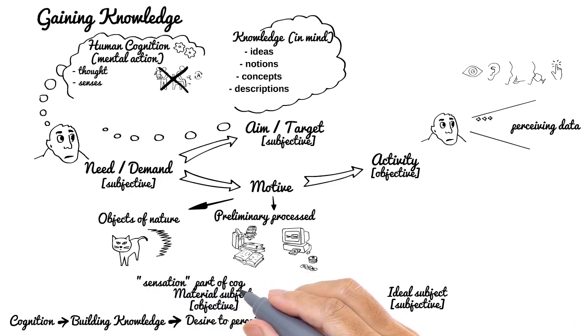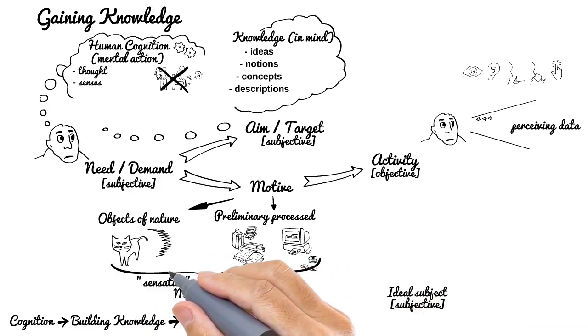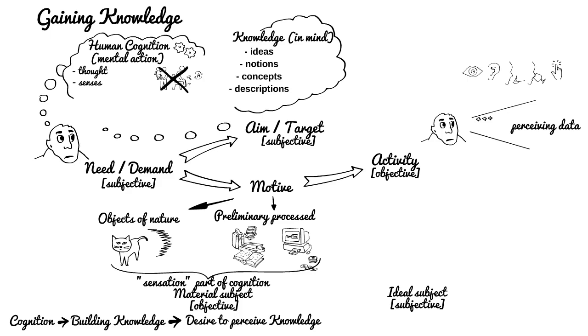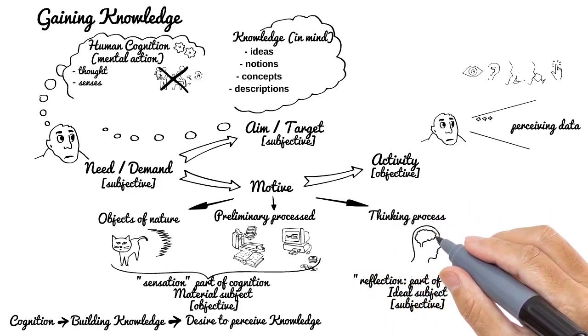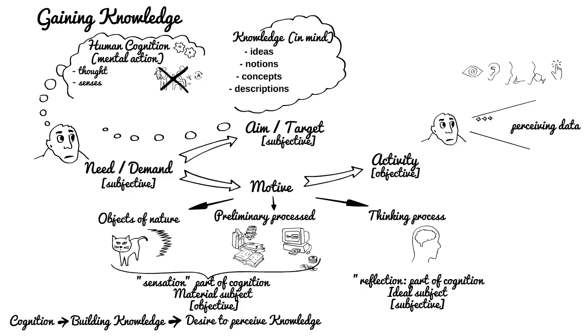Let's mention that motive, a subject of the need, can be in this case material or ideal, non-material. Sensation part is taking care of material type of motive, perceiving material effects of nature. But reflection part takes care of ideal type of motive, which is about thinking process, processing already existing knowledge in your head to create new knowledge. This process is not visible by others.